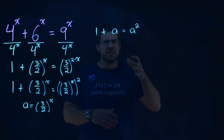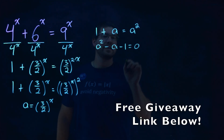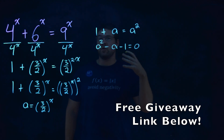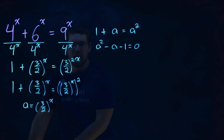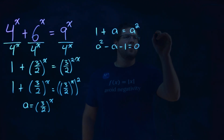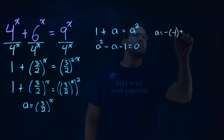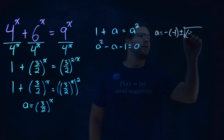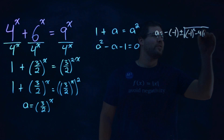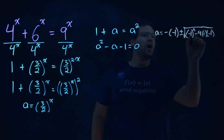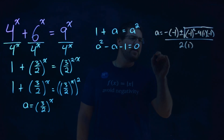I'll set it equal to 0 and solve. Bringing everything over: a² minus a minus 1 equals 0. At this point, I'm going to use the quadratic formula to solve for a, using a different color. The quadratic formula gives a equals negative b — the b value is negative 1 — plus or minus the square root of b² minus 4ac, all over 2a. Here a equals 1 and c equals negative 1, all over 2 times 1.